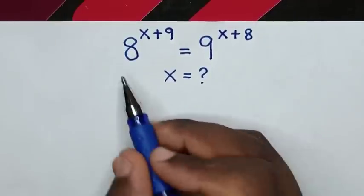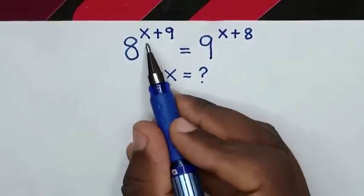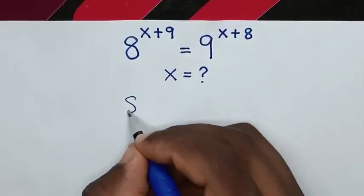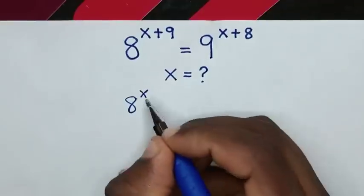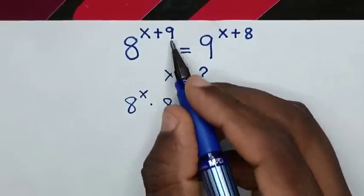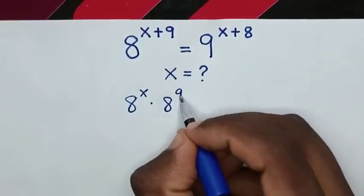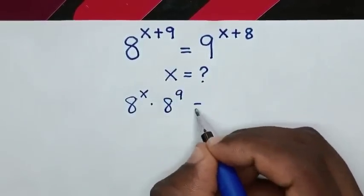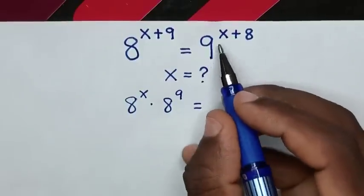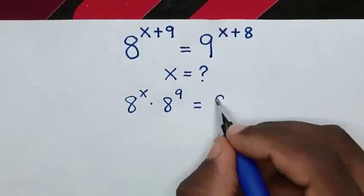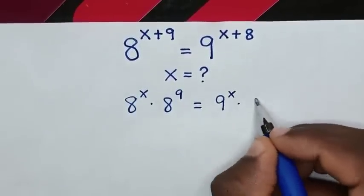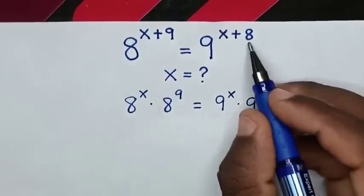So, from 8 power of x plus 9 is the same as 8 power of x times 8 power of 9. Then it is equal to 9 power of x times 9 power of 8.